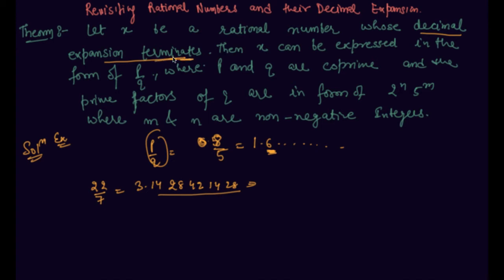Then x can be expressed in the form of p by q where p and q are coprime numbers. I told you what are coprime numbers in my previous lecture also. The numbers having common factor as 1 only.